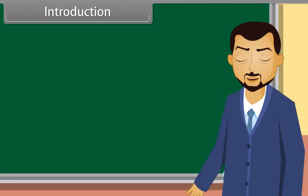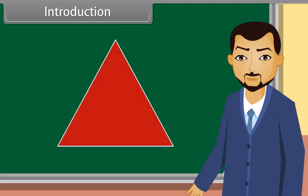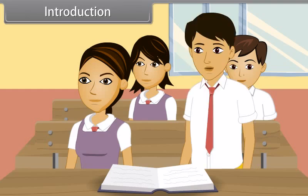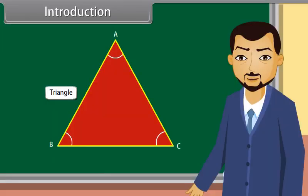Students, you must have studied about closed figures. Now, what do we call the figure which is formed by three intersecting lines? A triangle, sir! Yes, you are right, Rahul. A triangle. It has three sides, three angles and three vertices. Today, I will tell you about the congruence of triangles and the properties of triangles. Come, let's start.